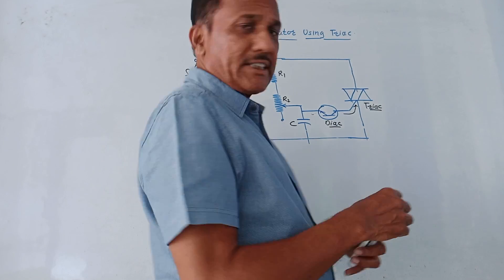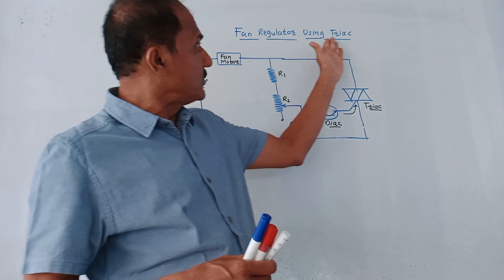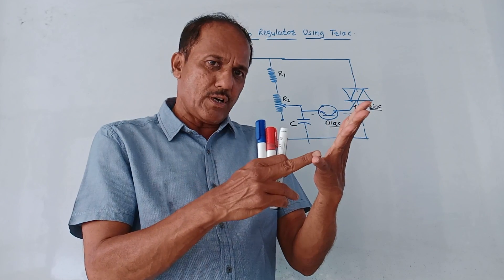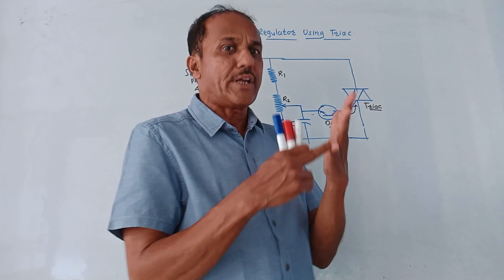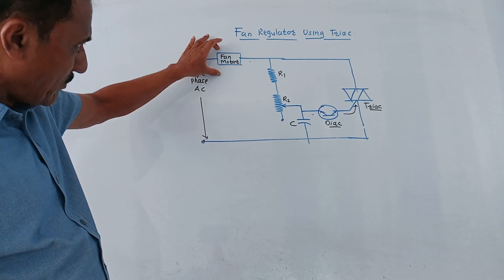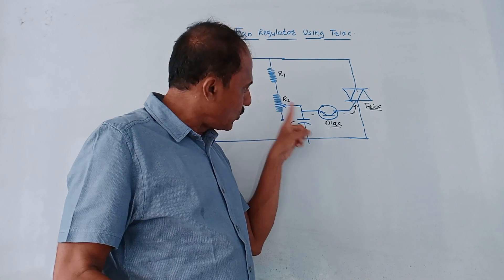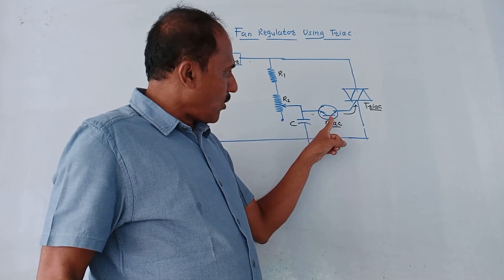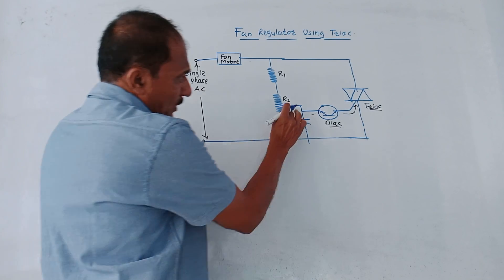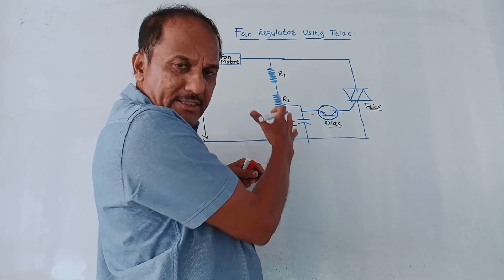Now let us discuss the application of power electronic devices: the fan regulator using DIAC and TRIAC. This application uses the combination of DIAC and TRIAC to regulate the speed of a fan. This is the corresponding circuit diagram. This is the fan motor, connected to single phase AC. We are using two resistors, R1 and R2, and one capacitor C. This is the combination of DIAC and TRIAC.